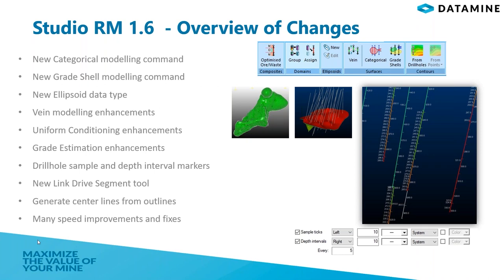Studio RM is continuing to develop with version 1.6. One of the important new features is the geology ribbon — there are lots of new tools to make geologists' jobs easier, and we are going to look at them in detail in this presentation. There are very good improvements in uniform conditioning and grade estimation as well. Also, you can now add depth and sample interval marks on ticks on the drill hole. In addition, performance increases in some commands and fixing of reported bugs have been applied with this release.